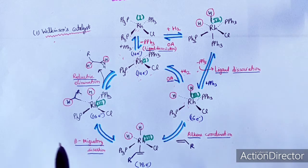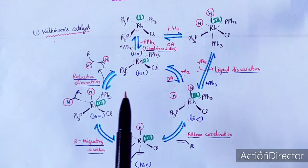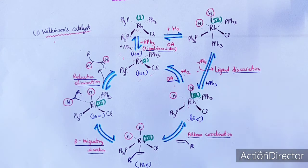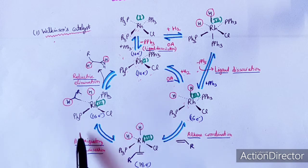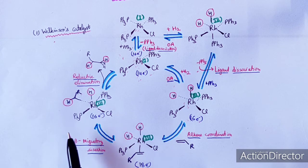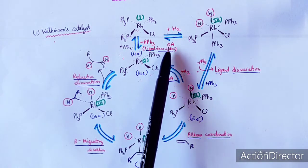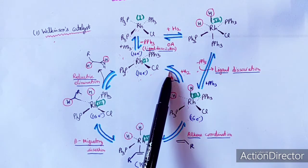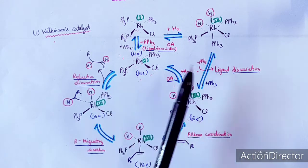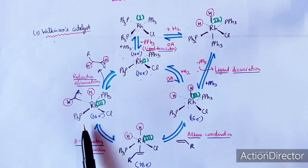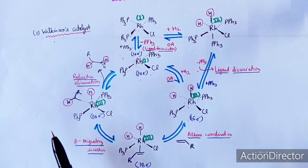The key difference between the Wilkinson catalyst (dihydride pathway) and the monohydride catalyst is the position of oxidative addition in the cycle. In the monohydride case, oxidative addition was the last step before reductive elimination, whereas in the Wilkinson catalyst, oxidative addition is the initial step and reductive elimination is the final step.